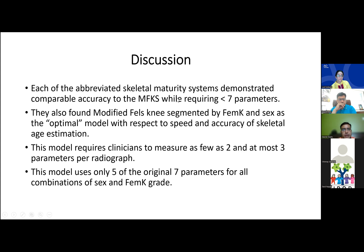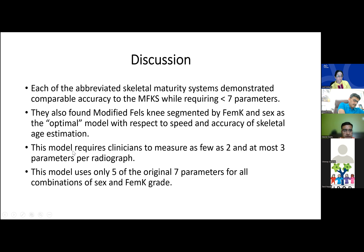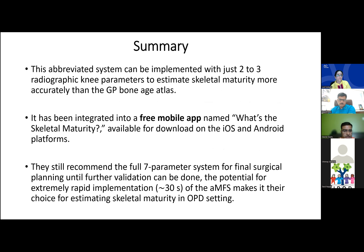Each of the four abbreviated skeletal maturity patterns demonstrated comparable accuracy to the modified Fells knee system while requiring fewer than seven parameters. The model segmented by FemK and sex was the optimal model for speed and accuracy, requiring a clinician to measure as few as two and at most three parameters per radiograph, using only five of the original seven parameters. Within 30 seconds, using those two parameters plus age and sex, assessment can be done via a mobile app.